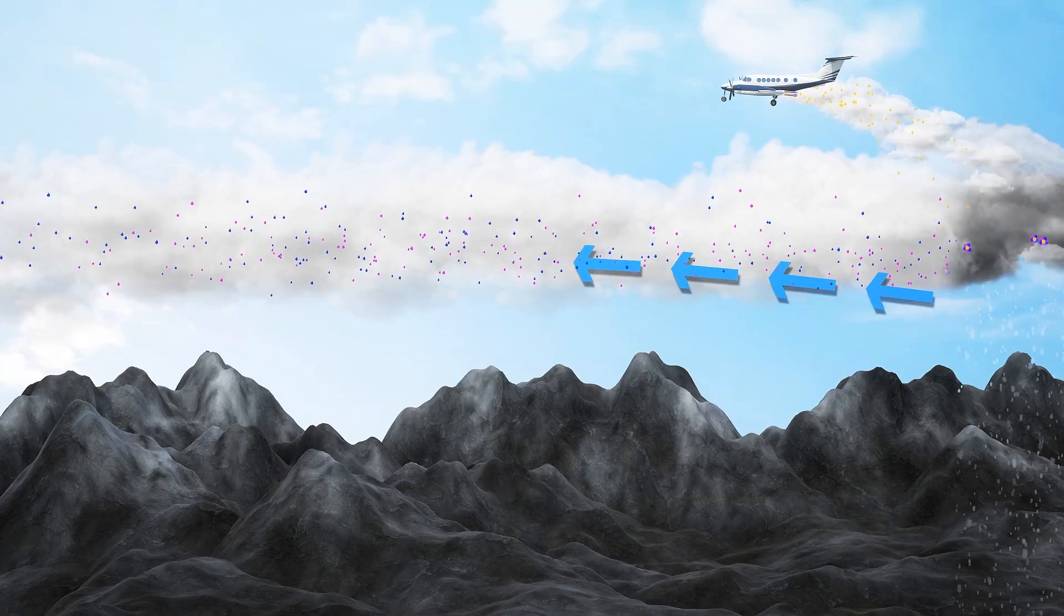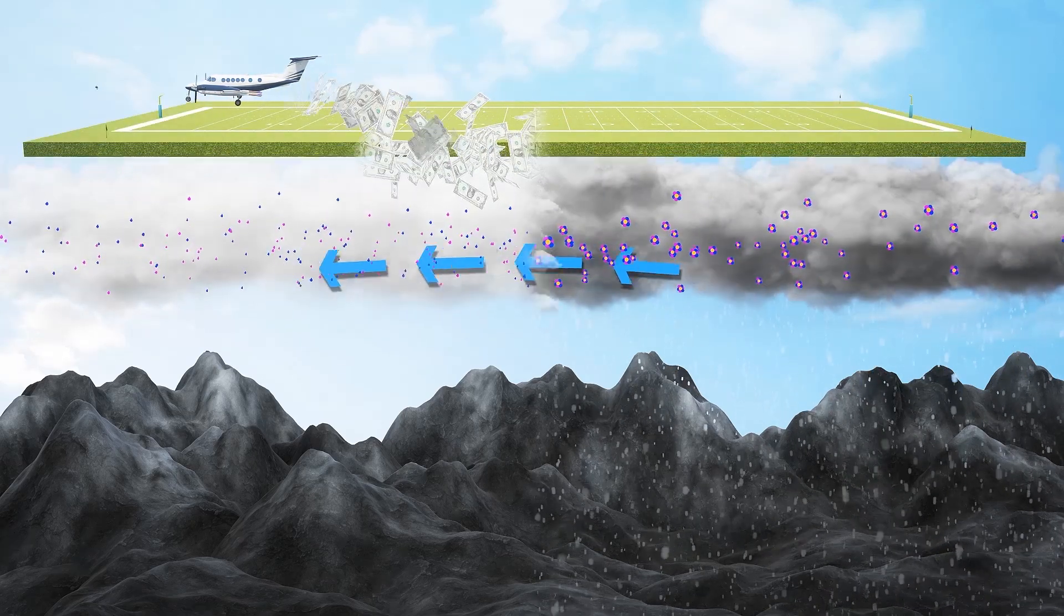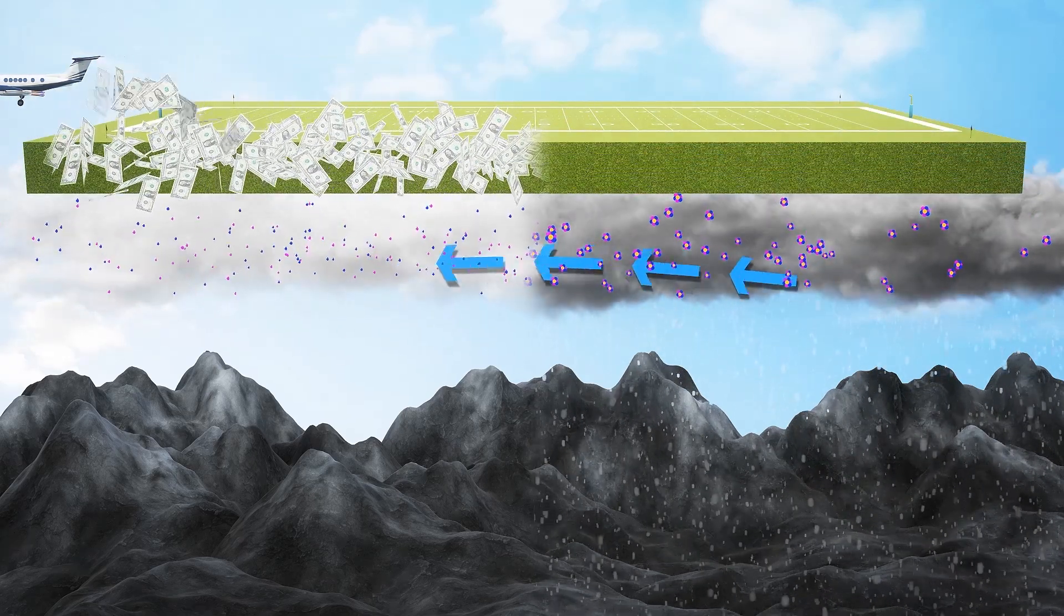more snow is created than otherwise would have fallen and that at $28 to $34 per acre, it represents one effective countermeasure against droughts.